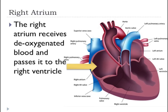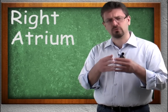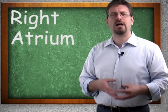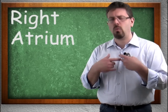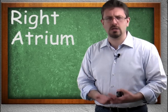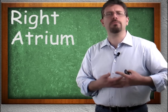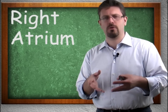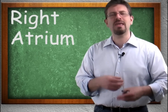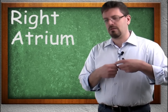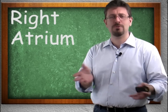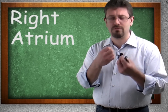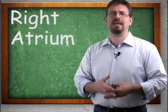The right atrium is where deoxygenated blood passes on to the right ventricle. The right atrium's job is to receive deoxygenated blood — it's receiving the waste blood from the body. So the right atrium is receiving blood from your toes, your nose, your ears, your elbows, and your knees. The right atrium is receiving used, deoxygenated blood — it's full of waste, full of carbon dioxide.